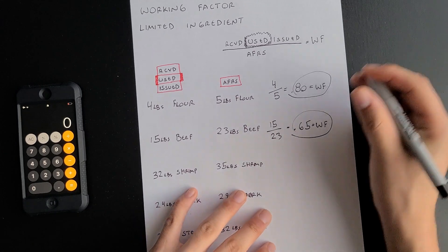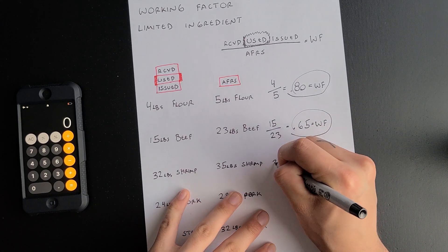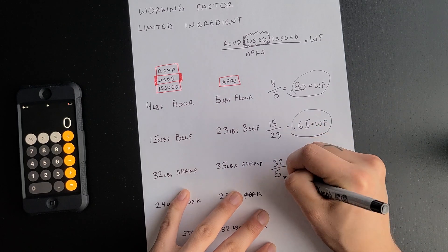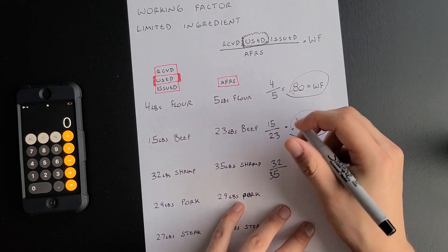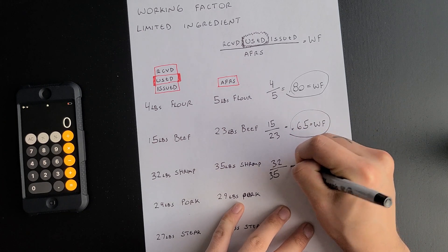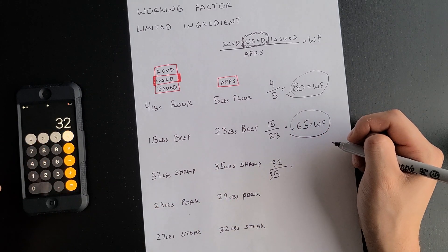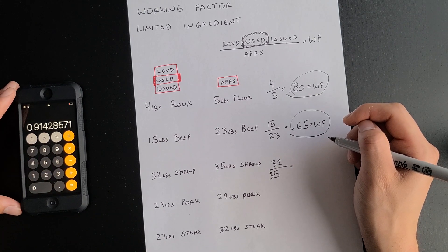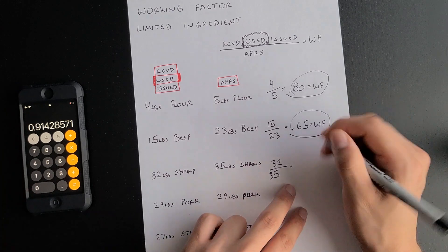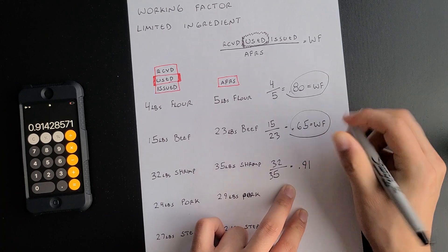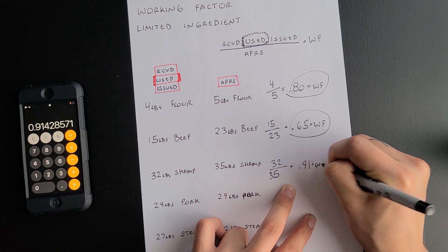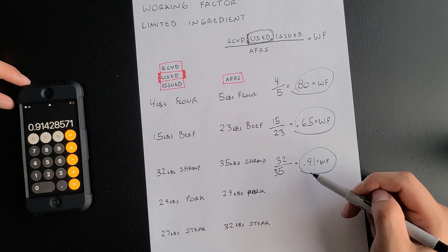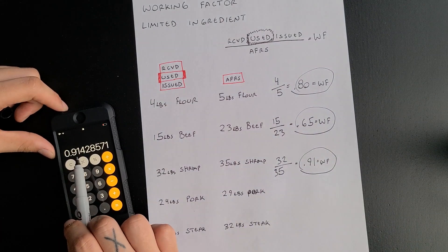This next one: 32 pounds of shrimp divided by the 35 that your AFRS calls for. So 32 divided by 35 equals 0.91. That's your working factor. We're only rounding up to the hundredths place — just these two numbers.